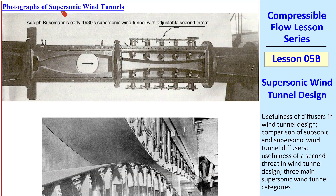Now I'll show you some photographs of actual supersonic wind tunnels. This was known way back in the 1930s. Here's an old wind tunnel with the variable area adjustable second throat, like we've been talking about. The test section is here with some supersonic Mach number. You can see the first throat and the second throat. In practice, they start with the throat open, start the flow up, and then slowly decrease the area until you get a weak shock just beyond the second throat.